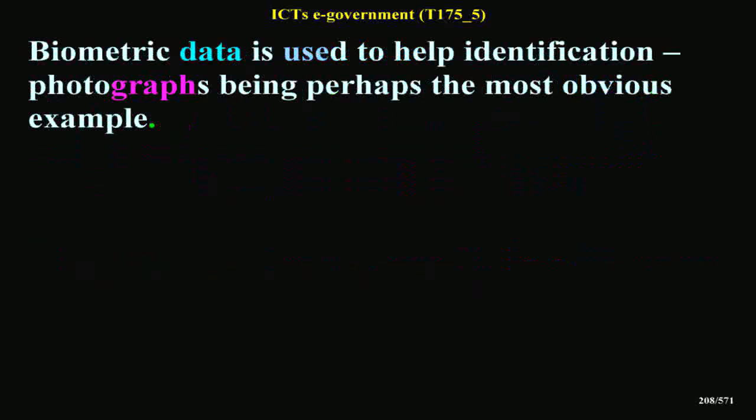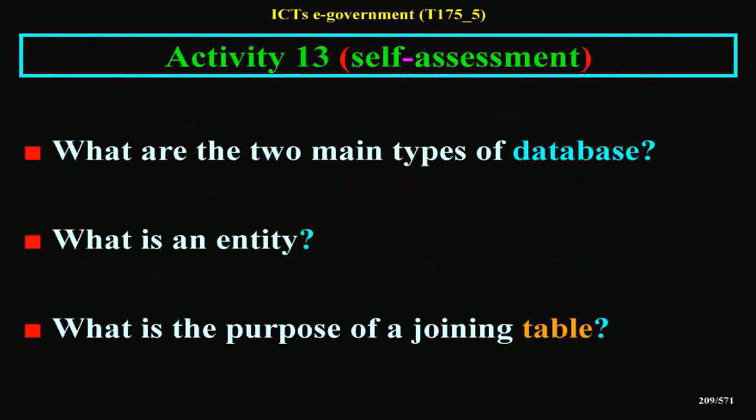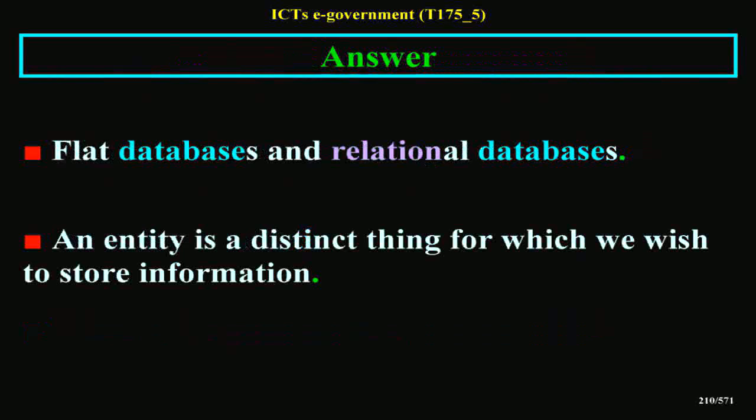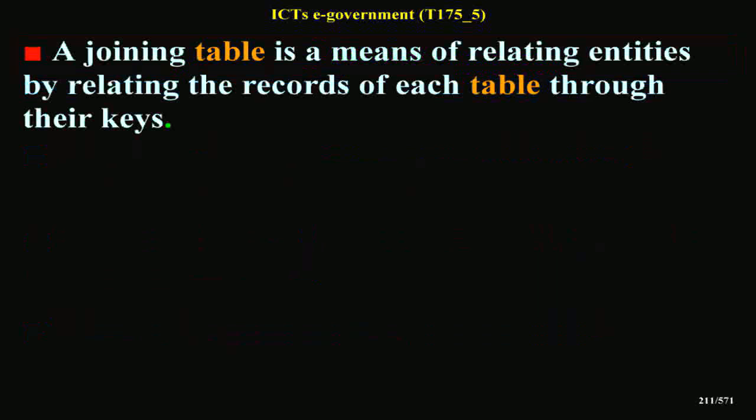Biometric data is used to help identification — photographs being perhaps the most obvious example. Activity 13 Self-Assessment: What are the two main types of database? What is an entity? What is the purpose of a joining table? Answer: flat databases and relational databases. An entity is a distinct thing for which we wish to store information. A joining table is a means of relating entities by relating the records of each table through their keys.